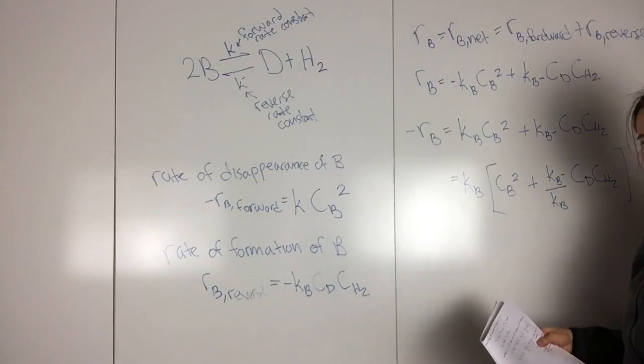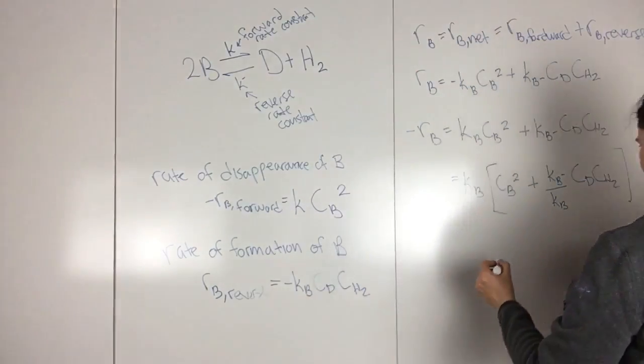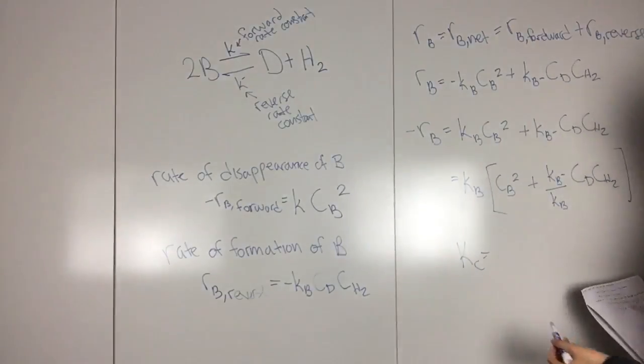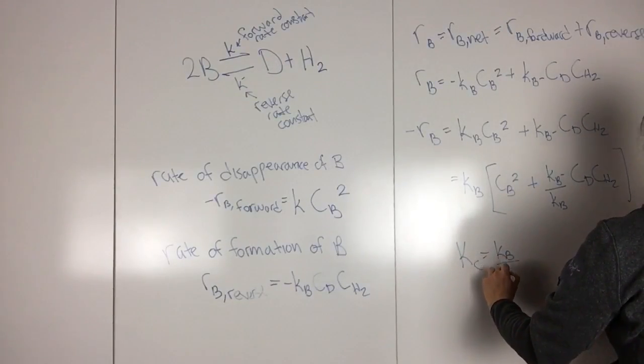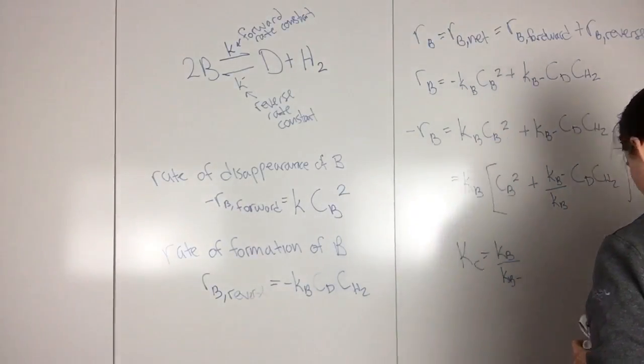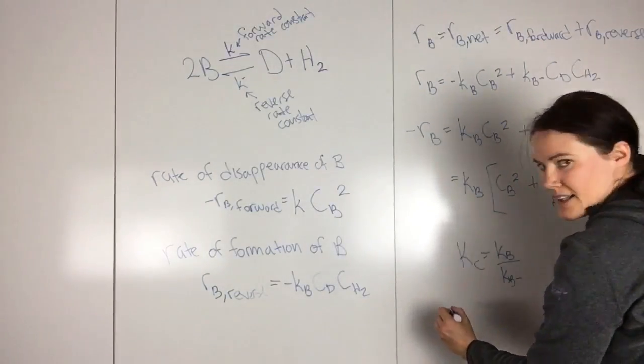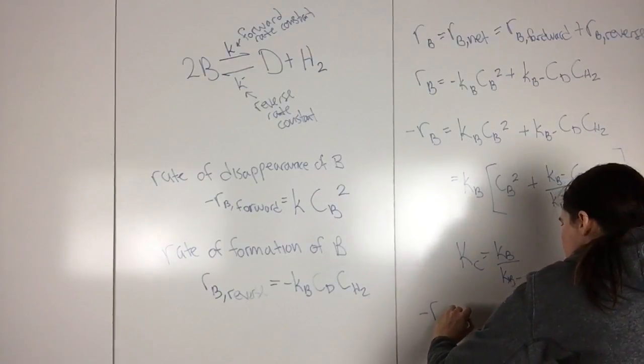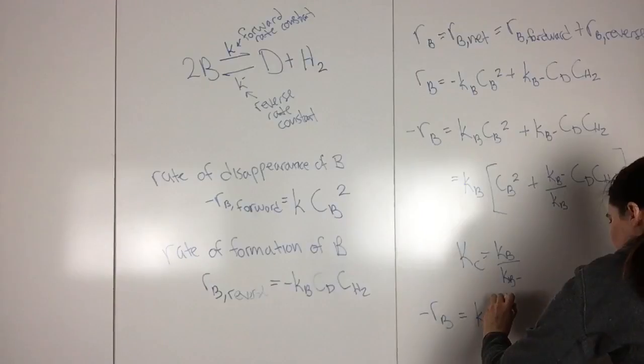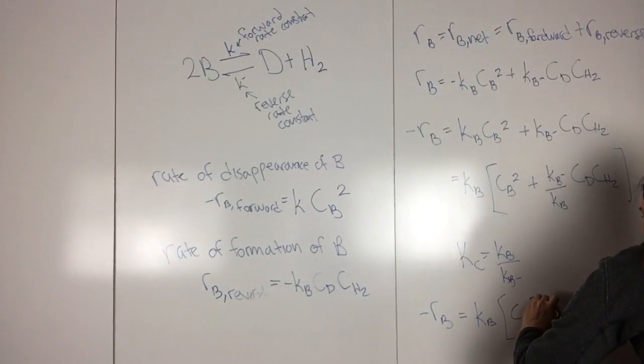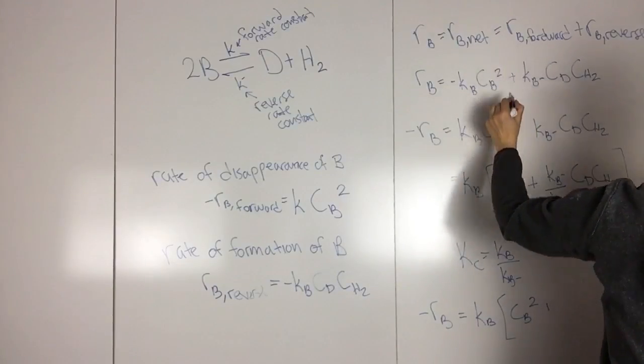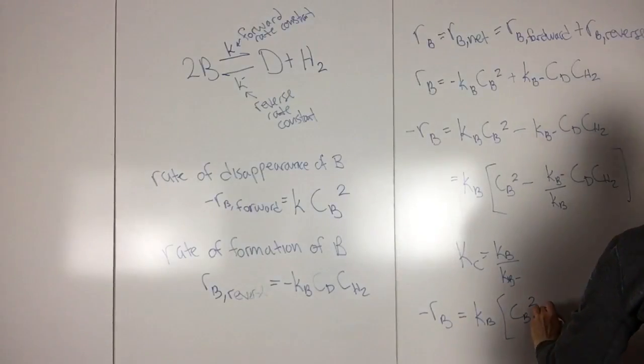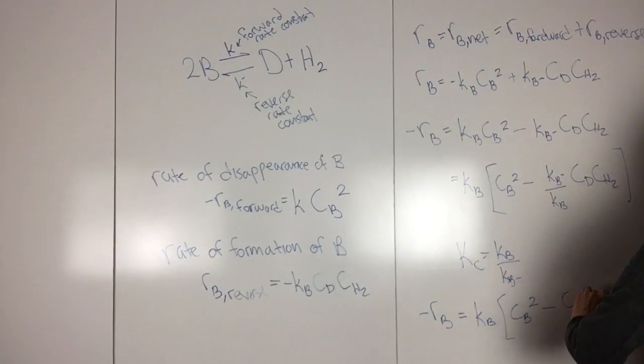And then from here, I can introduce the idea of the equilibrium constant. That's usually KC, and that is KC equals KB over KB minus. And so then I can plug this in, so I get the rate is equal to KB CB squared, that shouldn't be plus, this is minus. Minus CD CH2 over KC.